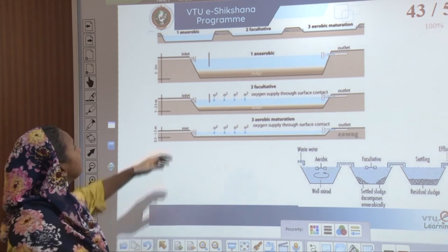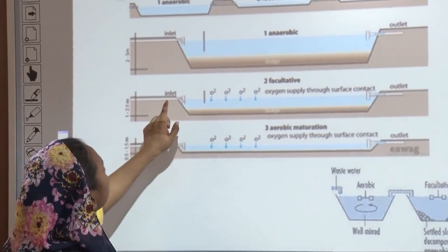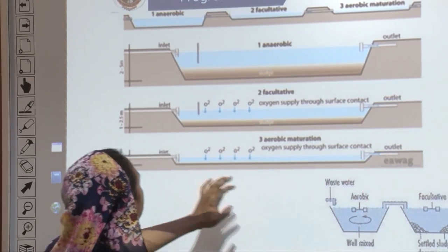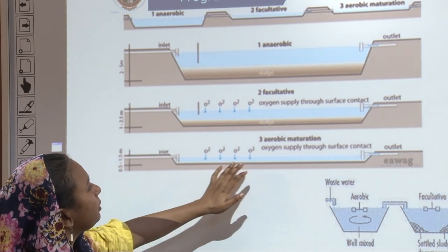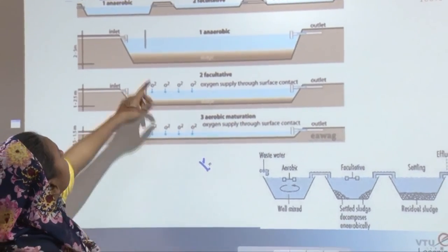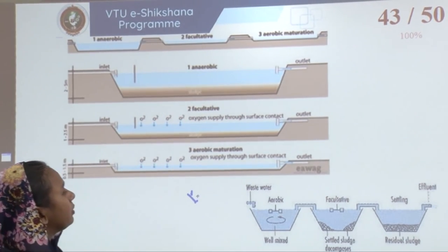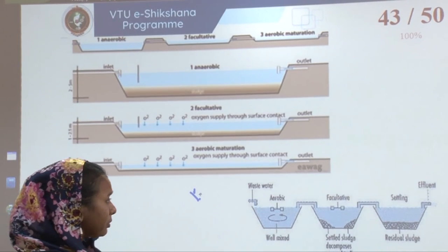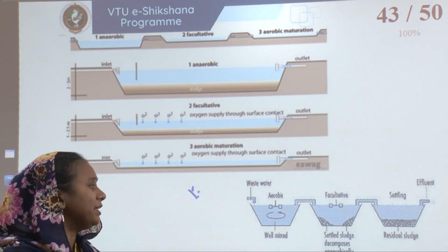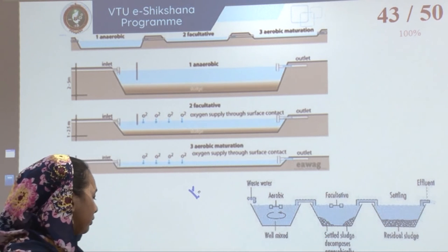In a facultative pond, the inlet leads to an anaerobic tank and then an outlet, with percentages of oxygen supplied through the surface. In an aerobic system, oxygen is continuously supplied through the surface and water content is lower. A combination system has separate anaerobic tanks, aerobic tanks, and facultative processes happening simultaneously. Aerobic is a well-mixed tank; facultative is where sludge settles and decomposes anaerobically; the residual sludge settles and effluent comes out of the outlet.